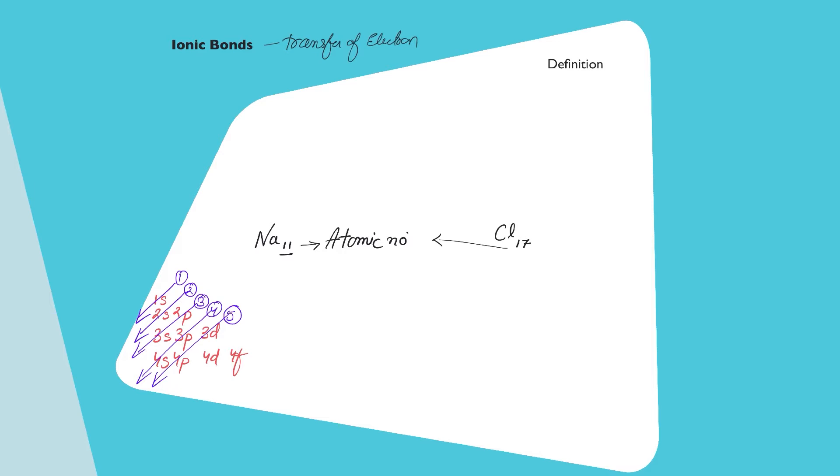Now sodium has an atomic number of 11. Now I hope you remember how do you exactly write the electronic configuration. I hope you remember this 1s, 2s, 2p, 3s, 3p, 4s. How do you follow the trend? So you go from this slanting directions. So let us write the electronic configuration of sodium.